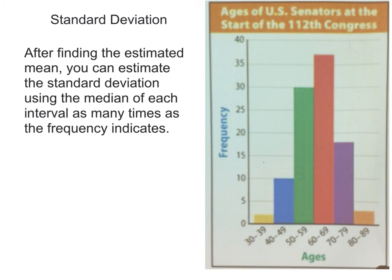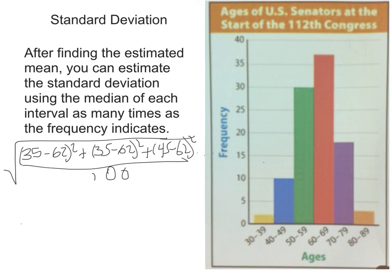After finding the estimated mean, you can estimate the standard deviation using the median of each interval as many times as the frequency indicates and by using the estimated mean with it. So in this particular example, we would take that 35 minus the average mean of 62 and square that, since there was two 35s, two frequencies of 35, we would do that a second time. Then we'd use the 45 minus the mean of 62 and continue with that. We'd do that 10 times, then we'd do 55 minus 62, 30 times in the square. Do all that and divide, eventually divide by the 100 and do the square root to get the answer. I'm not asking you guys to do that here, and I don't believe they're going to ask you to find an estimated value of anywhere near this many numbers in a frequency table like this. I believe it would just be good enough to know at this point that you could estimate the standard deviation following this method.